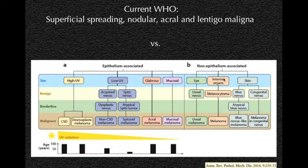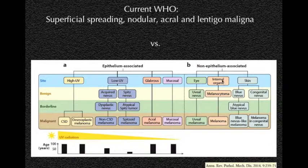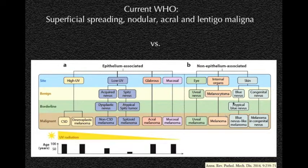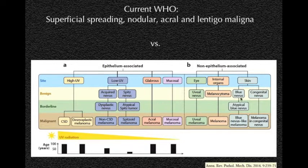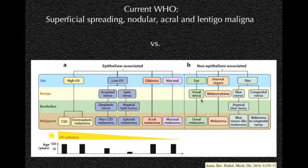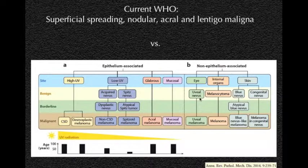Then glabrous skin harbors acral melanoma, mucosal skin harbors mucosal melanoma. He also included non-epithelium-associated tissues like the eye, from which uveal nevi and uveal melanoma could arise. There are rare cases when melanoma actually arises in internal organs, and we also have blue nevi and congenital nevi in the skin, from which melanomas could arise as well.